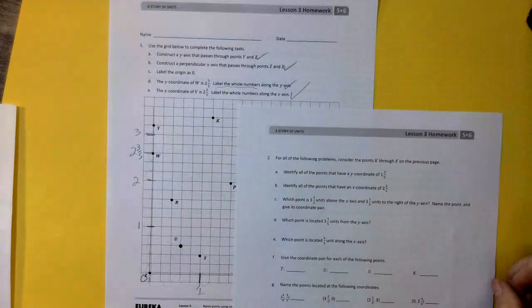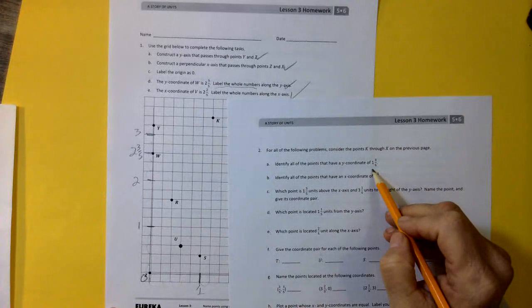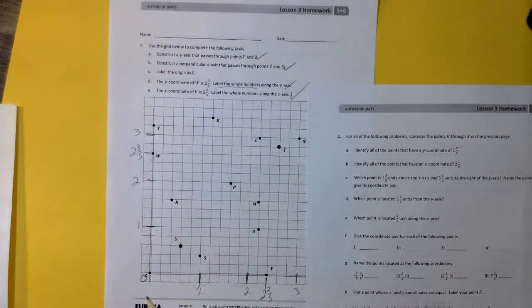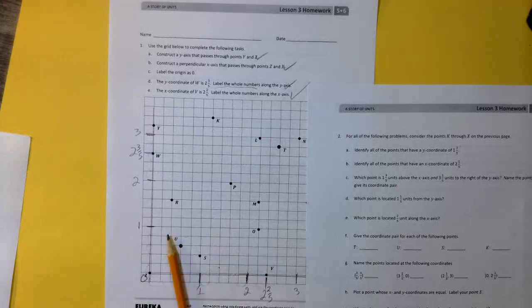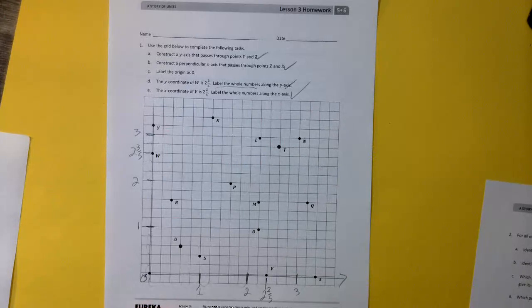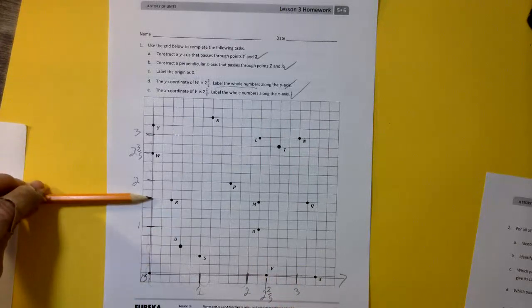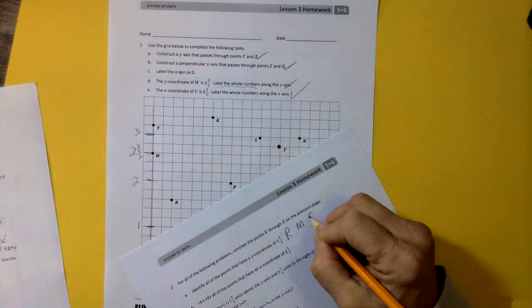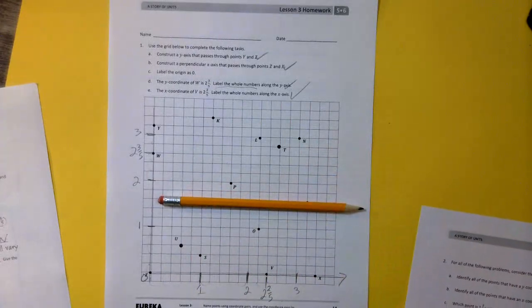Now I'm going to use the, it's on the back side, but I'm going to use this. Identify all the points that have a y-coordinate of 1 and 3 fifths. So all the y-coordinates of 1 and 3 fifths. So what we have to do is we have to think, where are we 1 and 3 fifths away from the x-coordinate or on the y-coordinate at 1, 1 and 1 fifth, 1 and 2 fifths, 1 and 3 fifths. So all of those points are R, M, and Q. See, this is all at 1 and 3 fifths. Right?